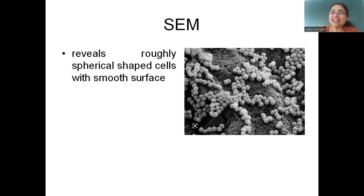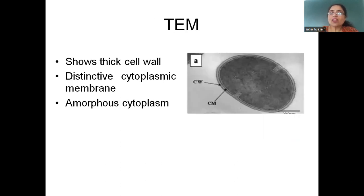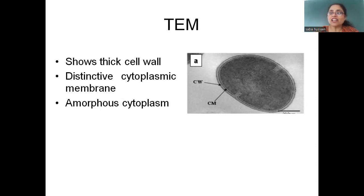Under the scanning electron microscope (SEM), we can see the spherical shape and smooth surface of Staphylococcus aureus. Under the transmission electron microscope (TEM), we can see it has a thick cell wall, a cytoplasmic membrane, and amorphous cytoplasm inside. These three different morphological views of Staphylococcus aureus under light microscopy, SEM, and TEM should be clear to you.